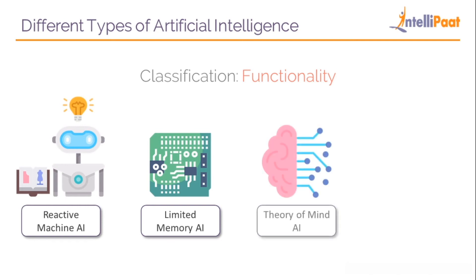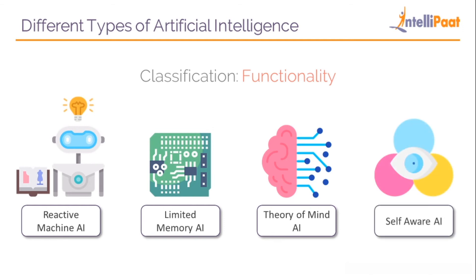Theory of mind AI has the ability to understand people, creatures, emotions, and objects in the world and interact accordingly. This type of AI is not developed yet — some researchers are engaged in working on it. Finally, self-aware AI is considered the final stage: machines that have their own consciousness and self-awareness, much more intelligent than human minds. They don't exist yet and remain a hypothetical concept.